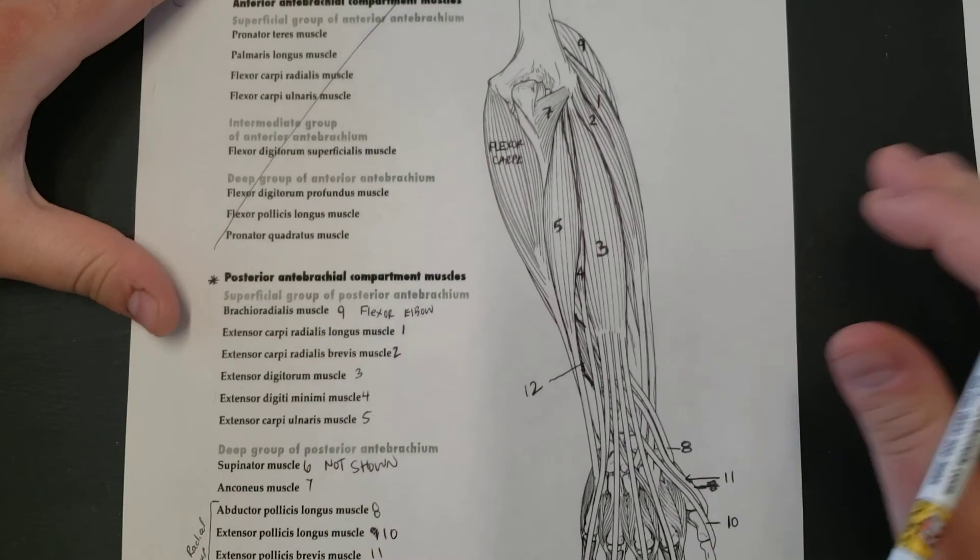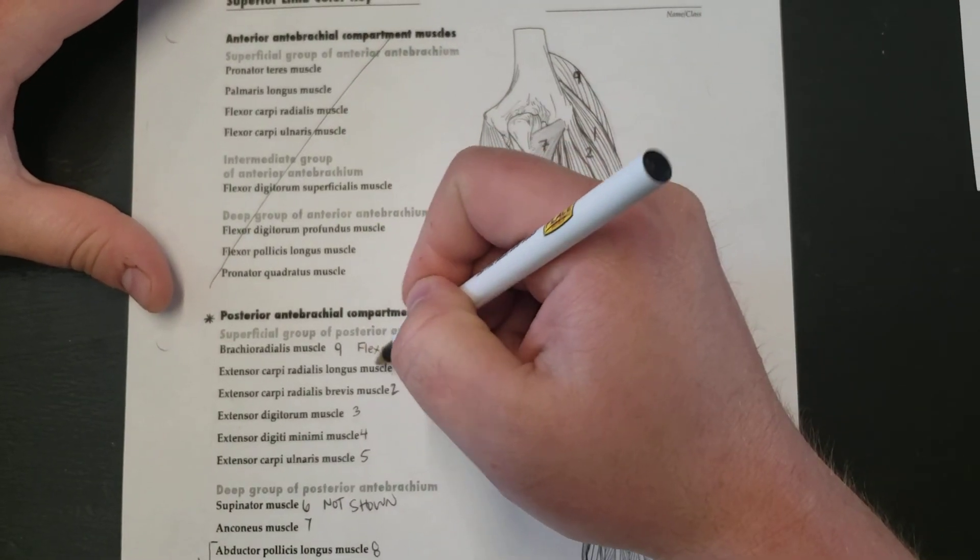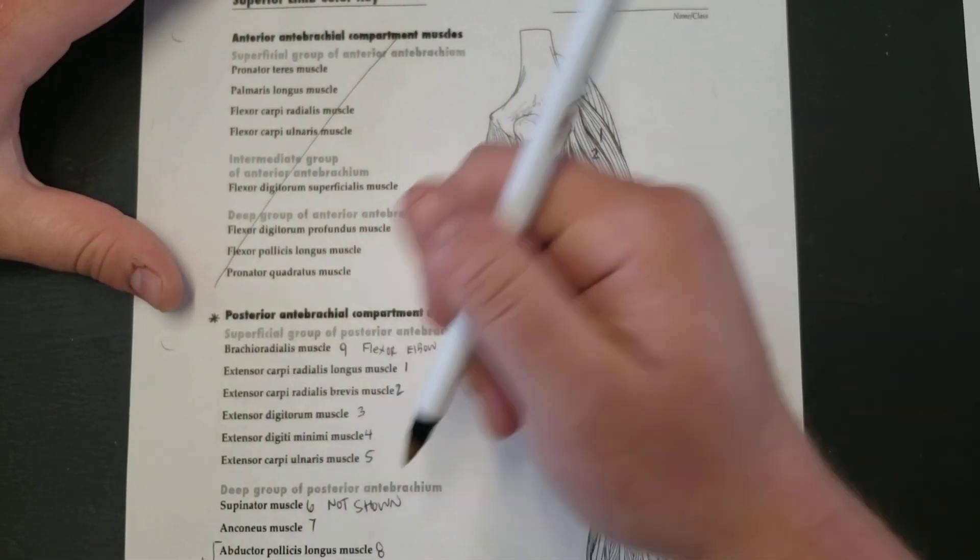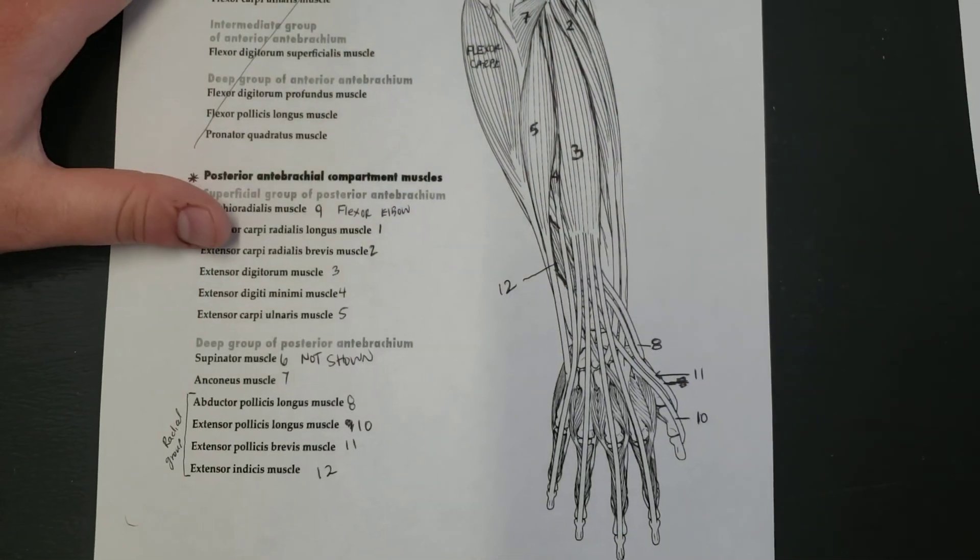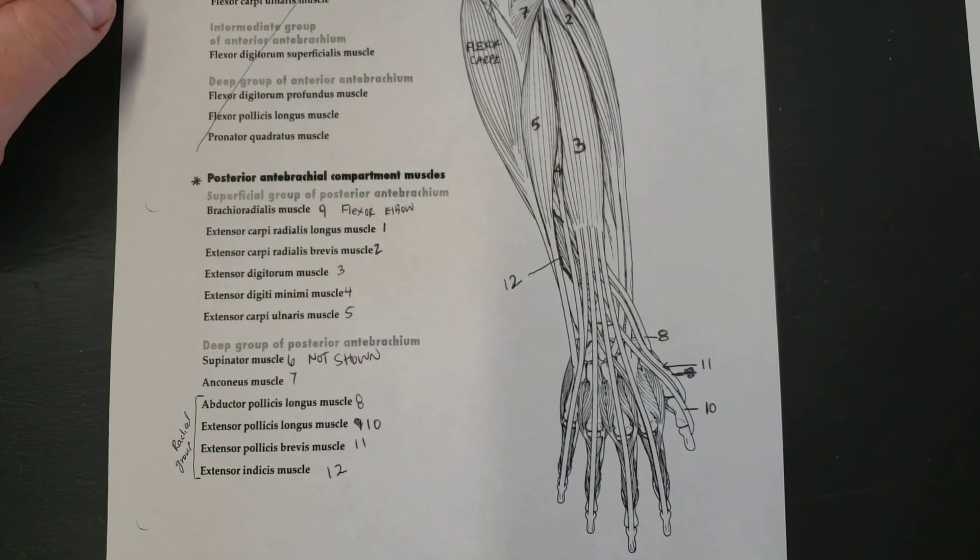That muscle is going to do flexion, which would be a good indicator for you guys to write on this second page that this is going to be a flexor, because the rest of these muscles are usually going to be called extensors. So I'll see you guys in the next video where we talk about the posterior compartment.